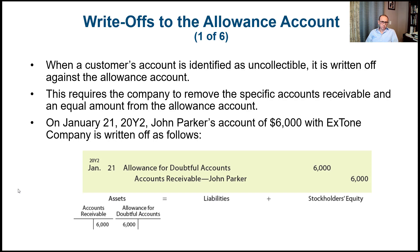This requires a company to remove the specific accounts receivable and an equal amount from the allowance account. Unlike the direct method — where we remove accounts receivable and record the expense right away — in the allowance method, we already recorded the bad debt expense at the time of the adjusting entry. Now we're going to use part of the allowance account balance.